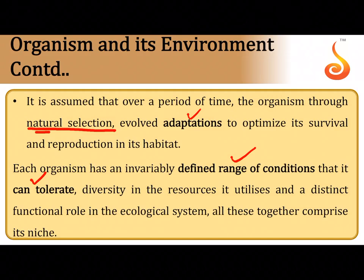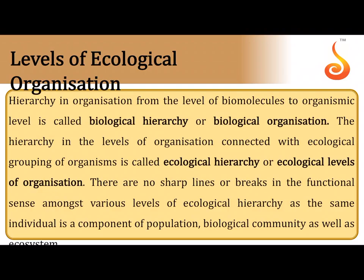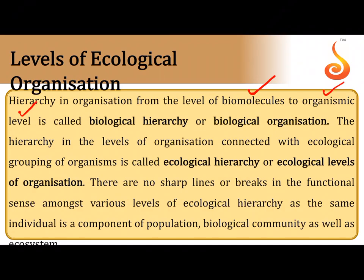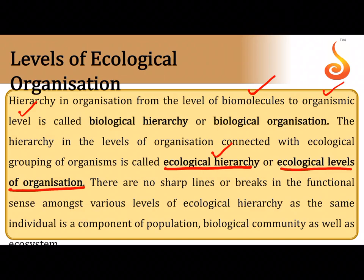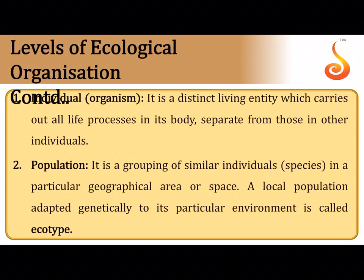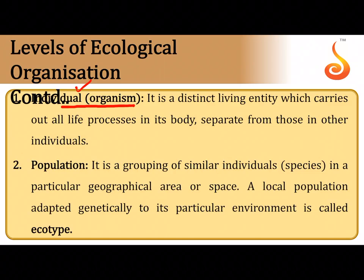Mammals and birds can tolerate a wide range of temperature, while each organism has its own tolerance limit. At the level of ecological organization, we start with an individual, then move to different levels of interaction. If we talk about ecological hierarchy, we start with the individual organism — the most basic level — who represents the smallest level of ecological organization, basically a mass of atoms and biomolecules constantly participating in life processes.